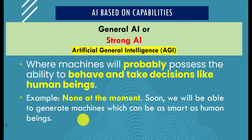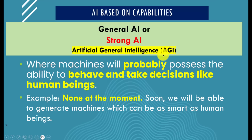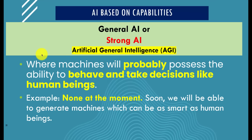The next type is General AI — also known as Strong AI or Artificial General Intelligence (AGI). This is where a machine or non-human entity probably possesses the ability to behave and take decisions like human beings. As I said, only Weak AI exists at the moment. All the others are speculative — still theoretical, in the future. Strong AI refers to machines that can be as smart as human beings and take decisions like humans.